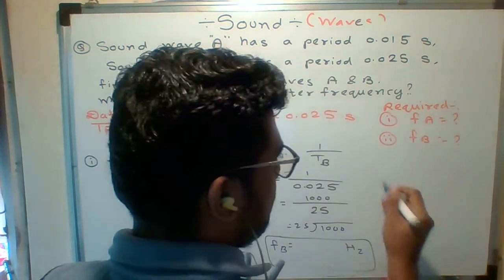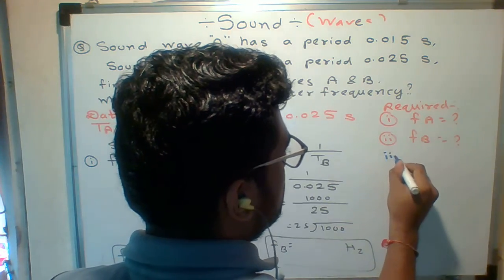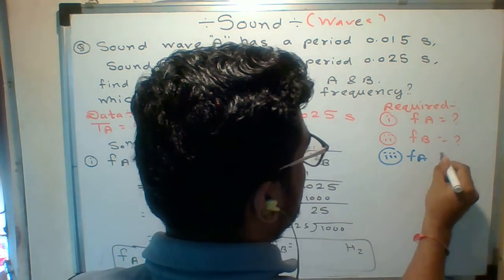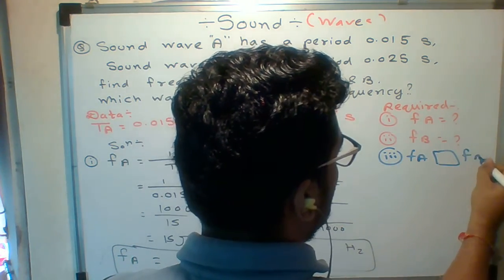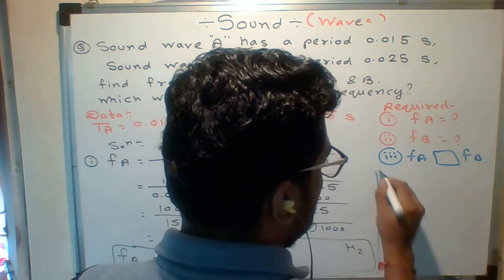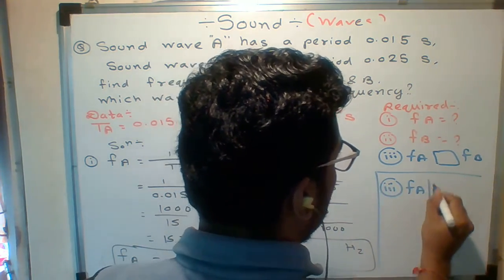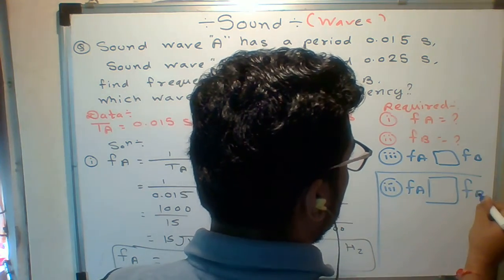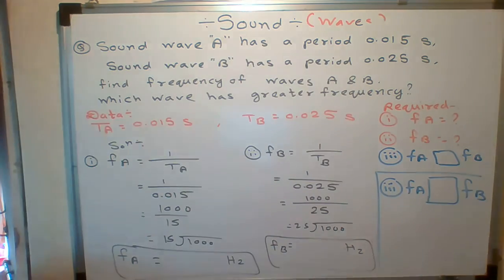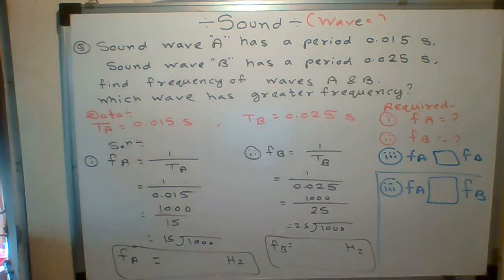Which one is greater? Frequency A is greater. The question is what? Third question: F of A and B. So let me write down the third answer. Which one is greater? F of A is greater or F of B is greater? Who will tell me the answer quick?